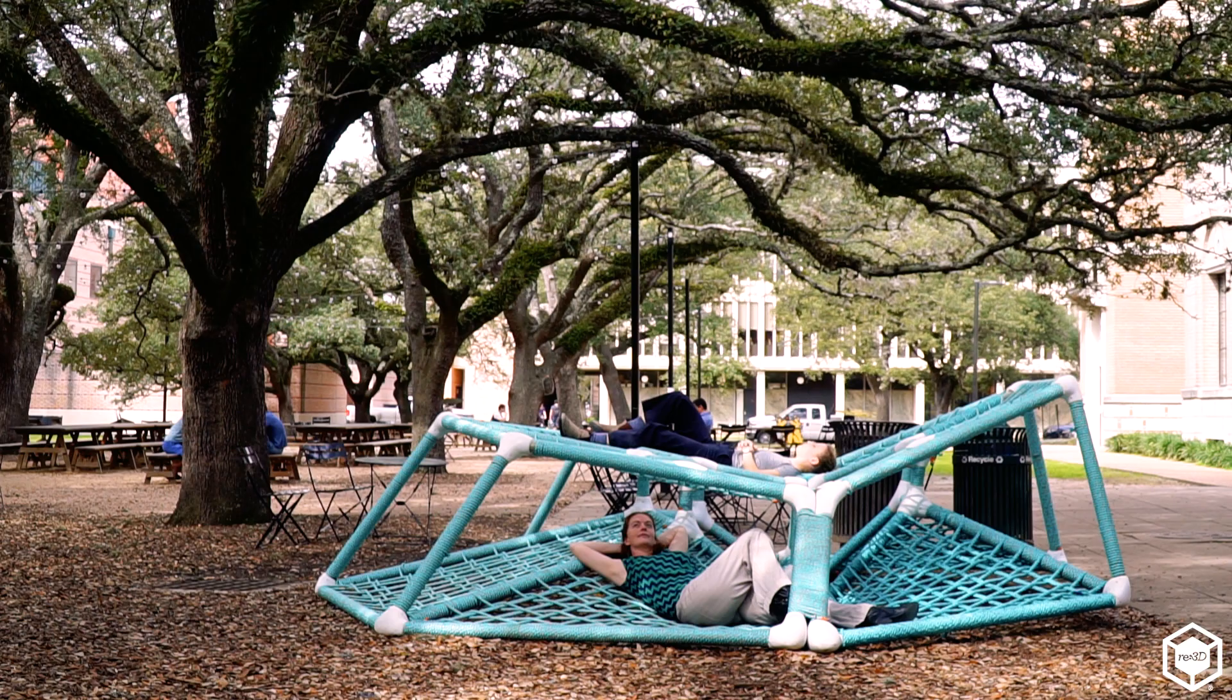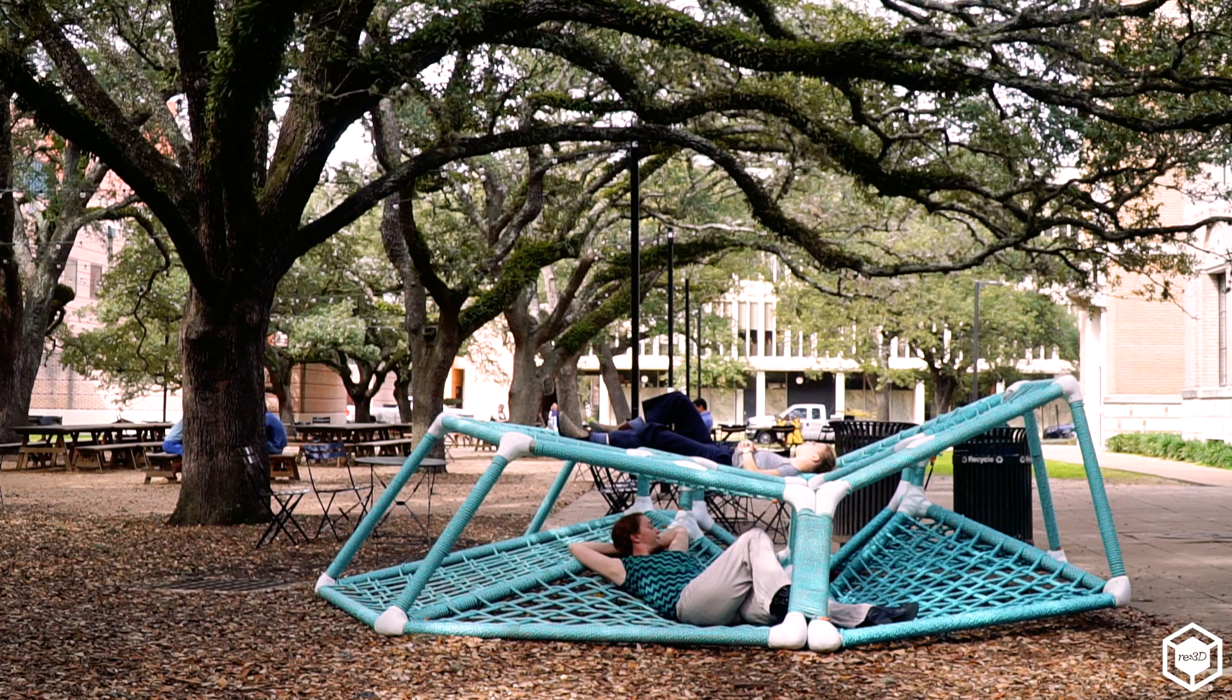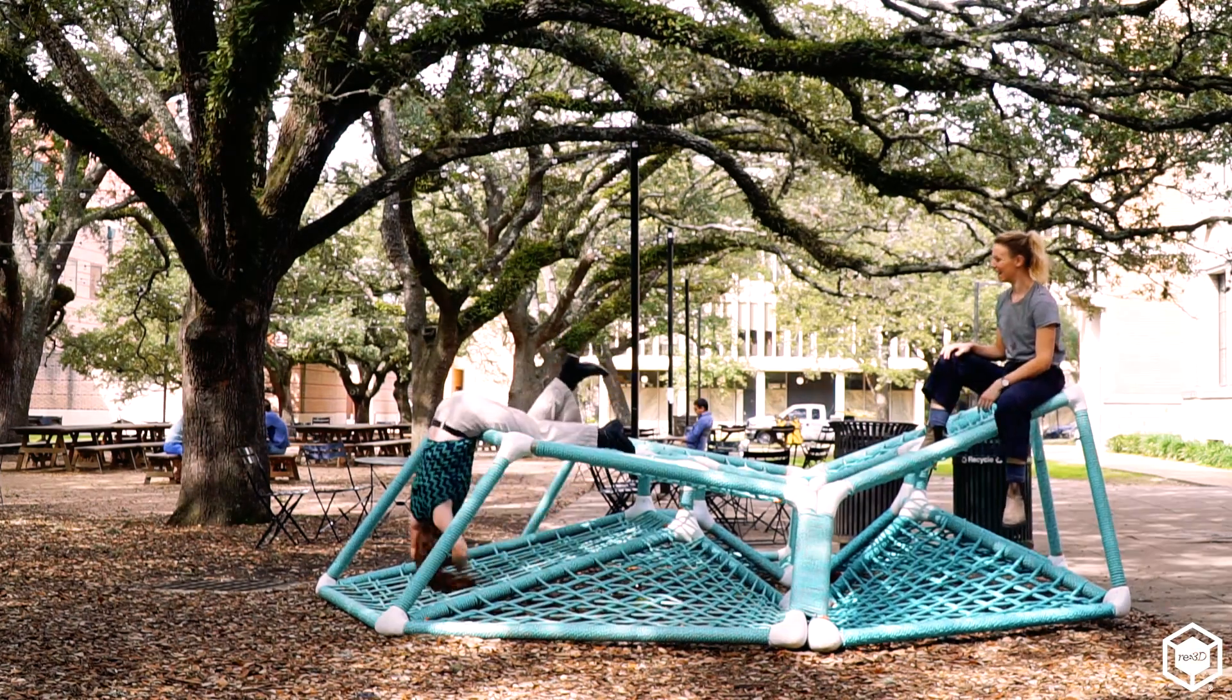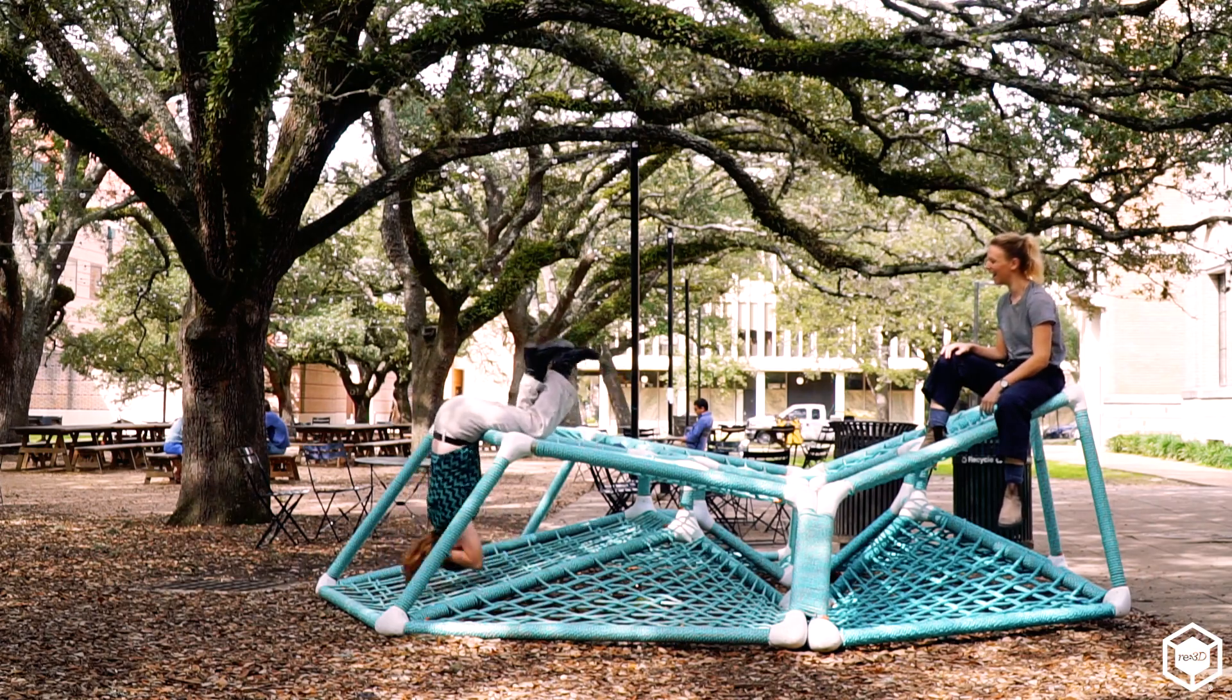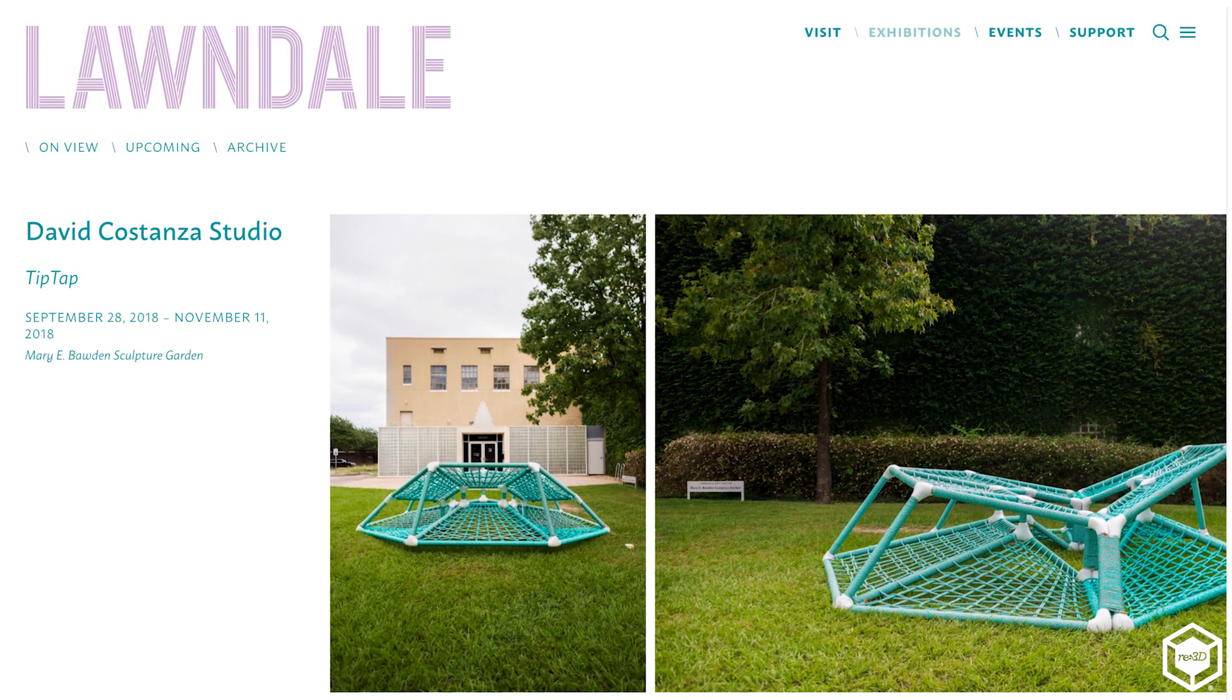The object itself is about 15 feet in diameter and it's asymmetrical. To one side, you have larger surfaces which allow you to lay down, and on the other side you have narrower surfaces which force you to sit upright. Depending on the number of people occupying the structure, it will tip to one side or the other. The name of the object is TipTap. It's really meant to bring people together through coordinated play.